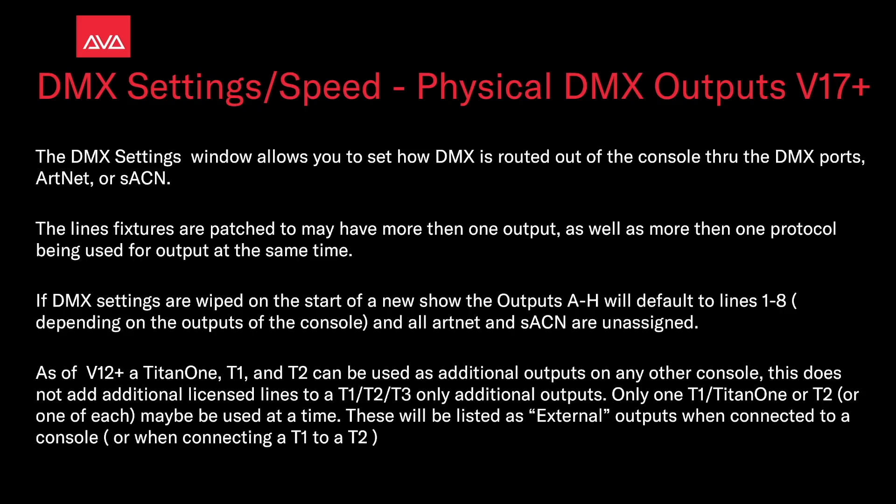The lines or fixtures patched may have more than one output, as well as more than one protocol being used for the output at the same time. The DMX settings are wiped at the start of a new show. The outputs A through H will default to lines 1 through 8, depending on the number of outputs of the console, and all Artnet and streaming ACN are unassigned.